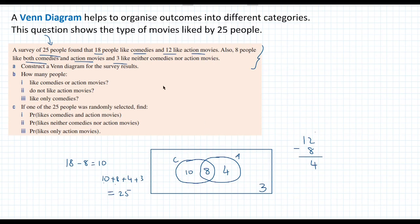And 12 people like action movies. So the numbers inside the action movies circle should add up to 12. And 8 plus 4 is 12. Okay, so that's how we know that we got our Venn diagram set up correctly. And now we can use the Venn diagram to answer some probability questions.